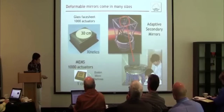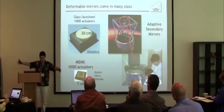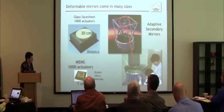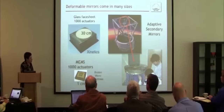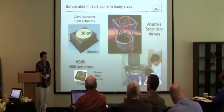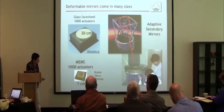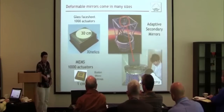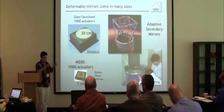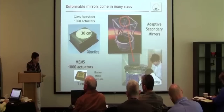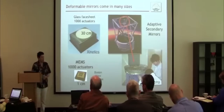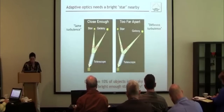Another approach is completely opposite — less than a centimeter across, made by micro-electromechanical systems fabrication, the same technology used to make computer chips, so it can be mass produced. These have a thin reflective silicon sheet on top with a coating to make it reflective, and little capacitors behind it that make it wiggle up and down. This is what's used in the Gemini Planet Imager.